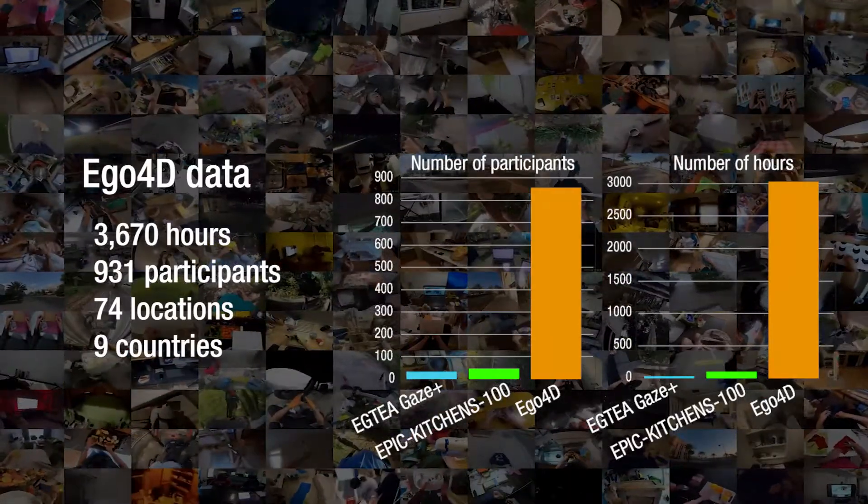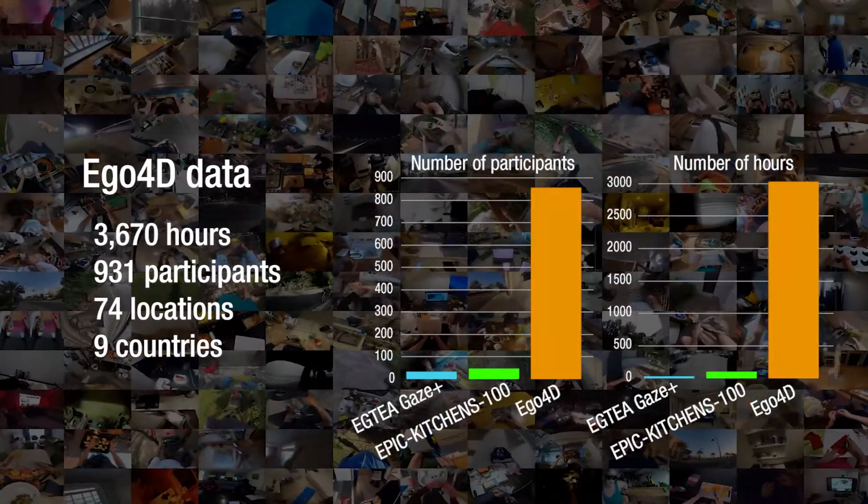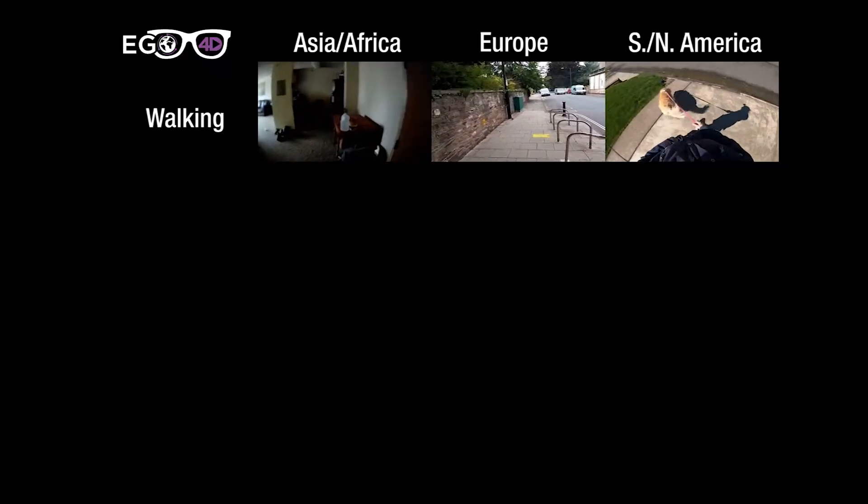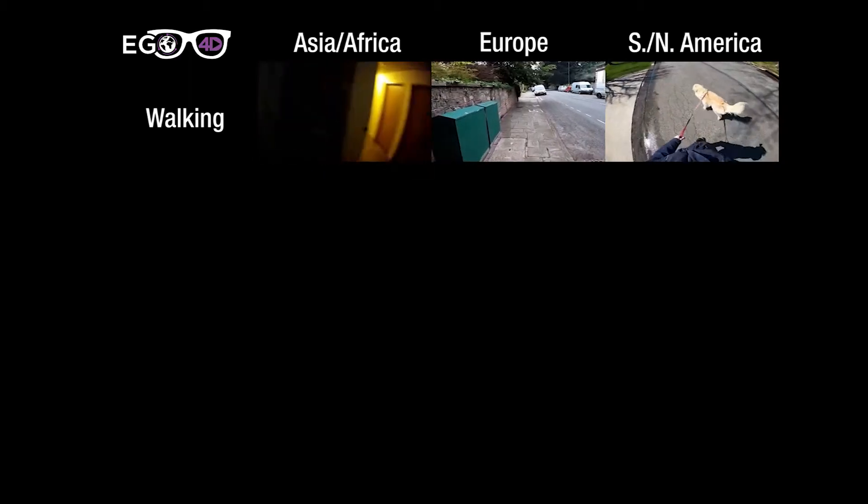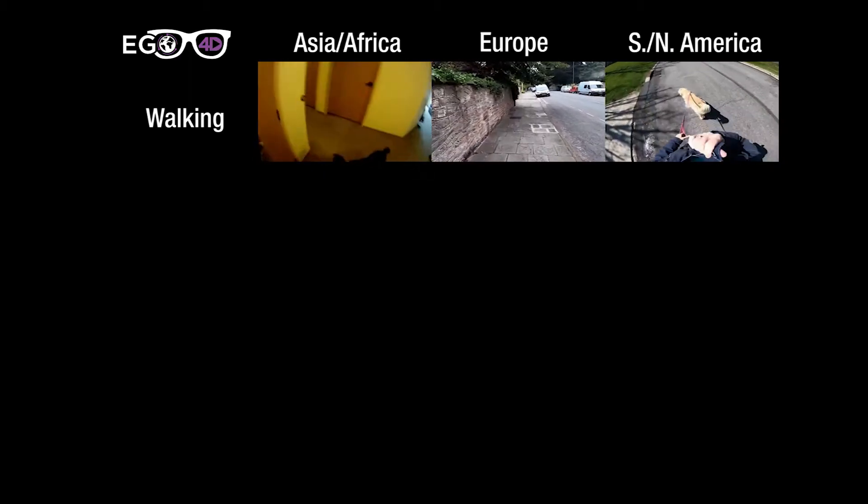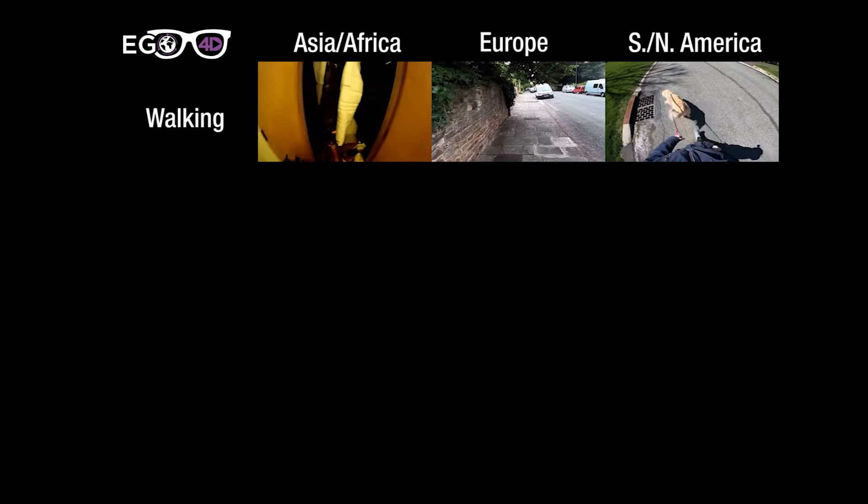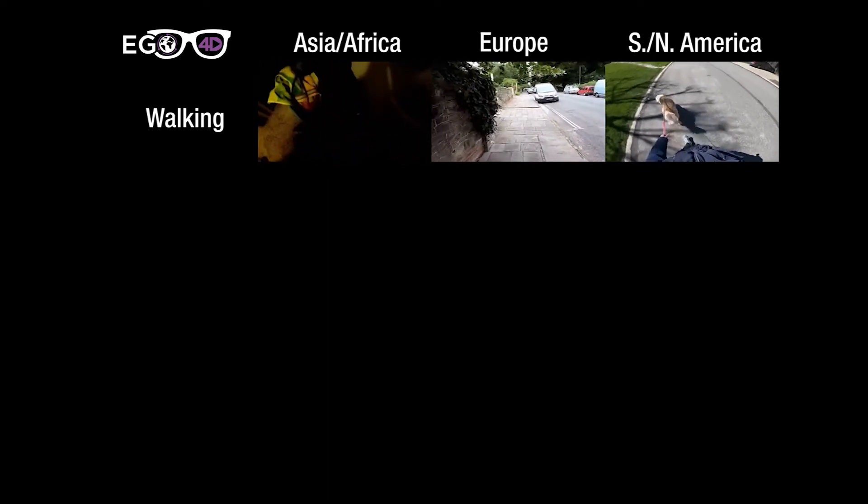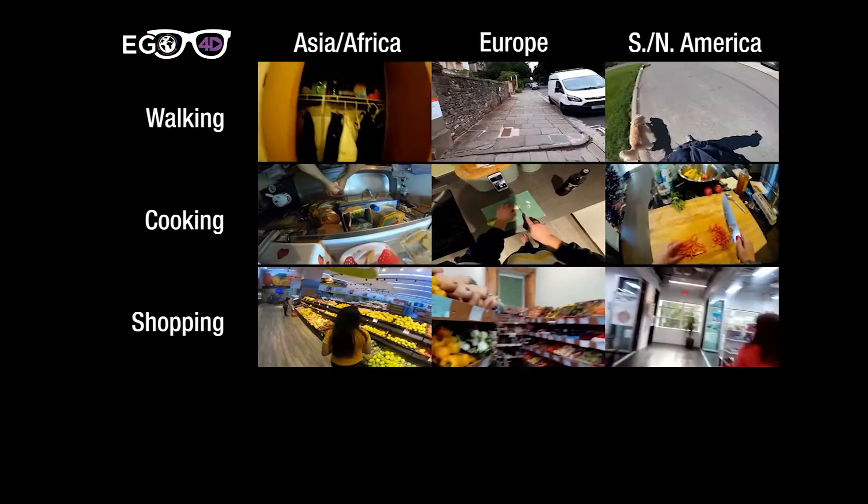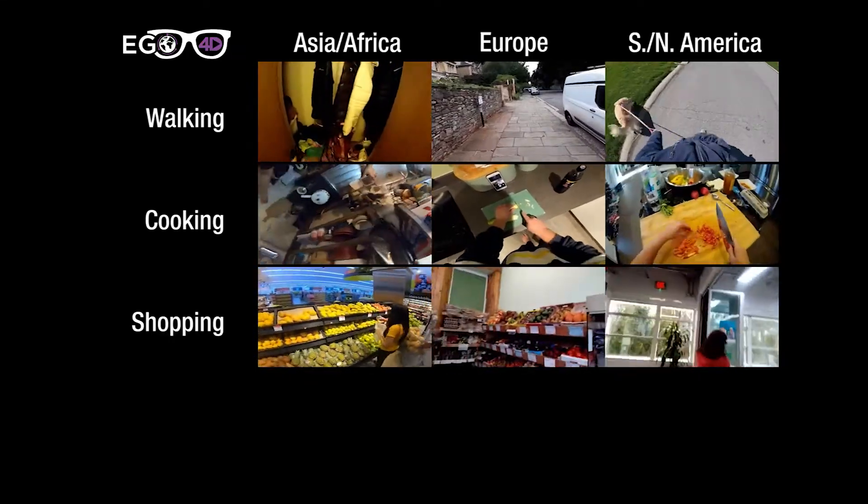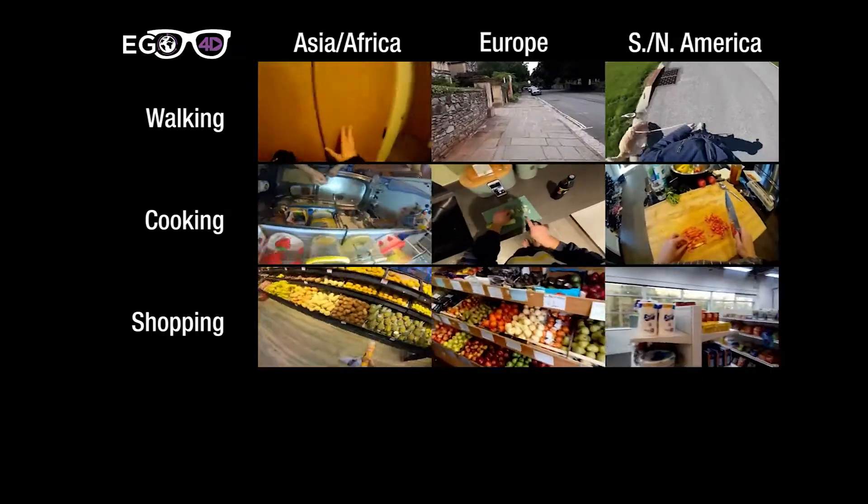These videos are unscripted and in the wild, representing natural interactions of camera wearers in the world. For example, see videos of walking activities taking place in different continents that depict diverse scene context and geometry. Cooking and shopping activities from different countries show location-specific cuisine, materials, and methods.